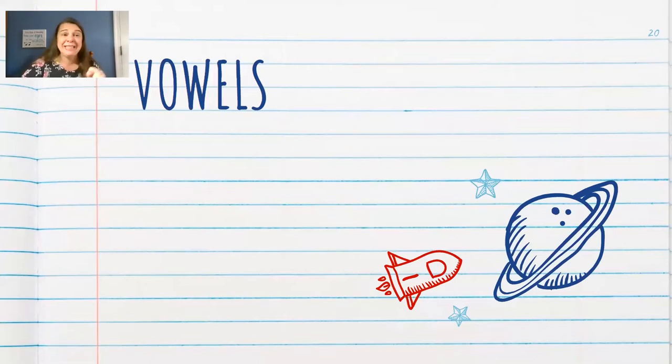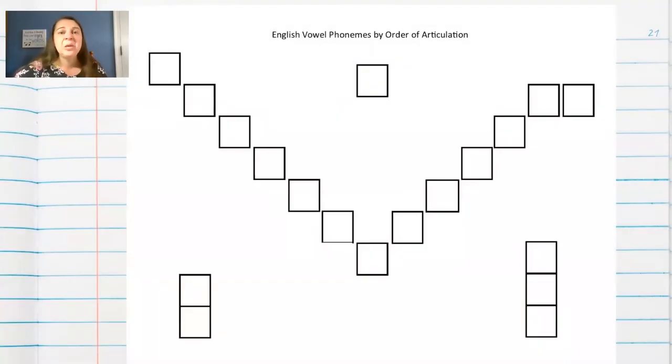All right, it's vowel time. Who's excited? I'm excited. Vowel time, here we go. So, English vowel phonemes by order of articulation.